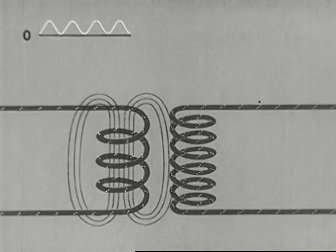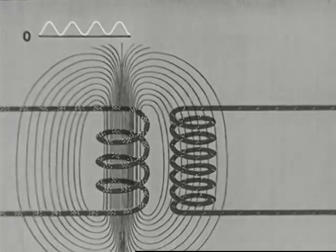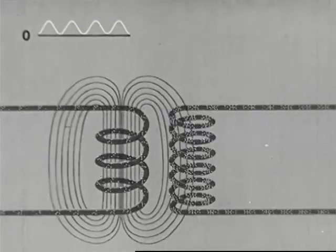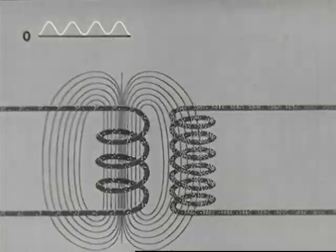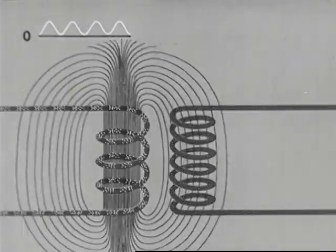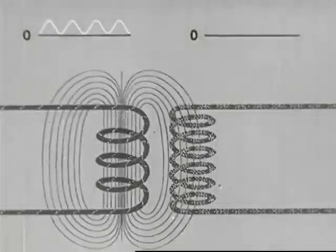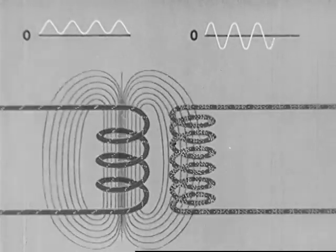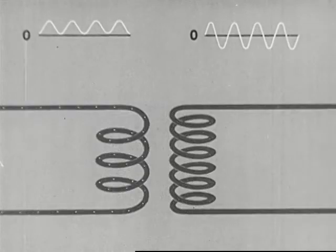When the magnetic field builds up, the secondary current flows in one direction. When the magnetic field collapses, the secondary current flows in the opposite direction. A current which flows in one direction and then reverses to flow in the other direction is called an alternating current. At the top we now trace out a curve to represent the alternating current in the secondary. When the curve crosses the zero line, it shows that the current is changing direction.